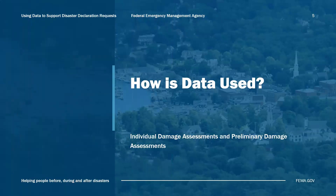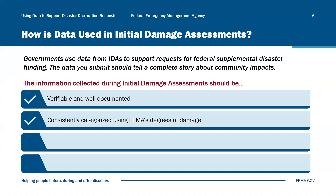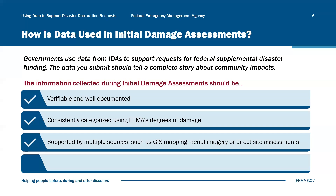How is data used during preliminary damage assessments? When a disaster incident occurs, local, territorial governments, and tribal nations work to understand its impact by collecting information from affected communities. They use an initial damage assessment, or IDA, to gather this data. The information collected during initial damage assessments must meet certain criteria: it has to be verifiable and well-documented, consistently categorized using FEMA's degrees of damage, and supported by multiple sources such as GIS mapping, aerial imagery, or direct site assessments.